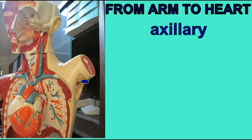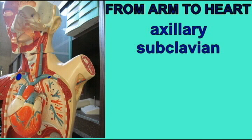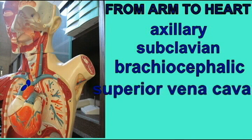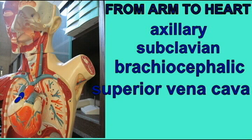This model would begin with the axillary vein, leading into the subclavian vein, leading into the brachiocephalic vein — once again there is one brachiocephalic vein on both the left and the right sides — which then empties into the superior vena cava, into the right atrium.